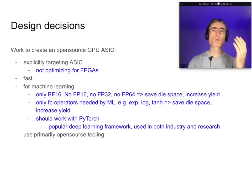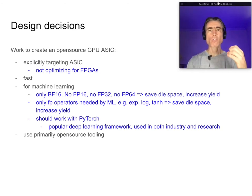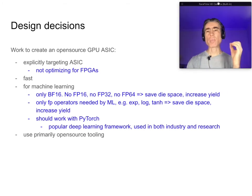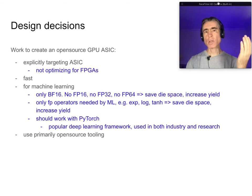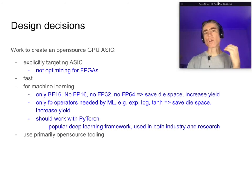Because we're targeting machine learning, there are some optimizations we can do. Recently there is a type of float called BrainFloat 16, BF16. This is becoming quite popular in large models like transformers and very large language models. It has the same dynamic range as FP32 but uses fewer bits. So calculations, space, memory transfer — everything goes faster. I want to only target BF16.